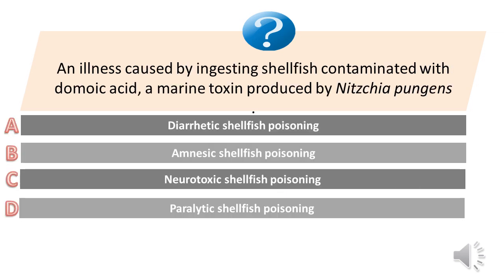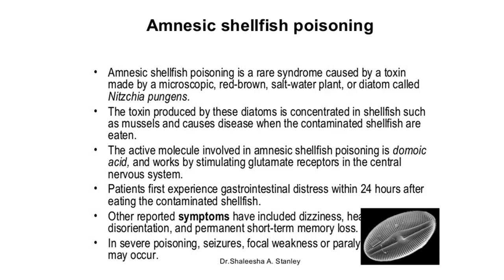An illness caused by ingesting shellfish contaminated with domoic acid, a marine toxin produced by Pseudo-nitzschia pungens. A. Diuretic shellfish poisoning. B. Amnesic shellfish poisoning. C. Neurotoxic shellfish poisoning. D. Paralytic shellfish poisoning. Answer is B. Amnesic shellfish poisoning. Symptoms differ considerably from slight nausea and vomiting to loss of equilibrium and central neural deficiency, as well as confusion and memory loss. First reported in 1987 in Prince Edward Island, Canada.